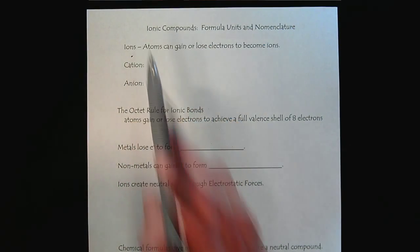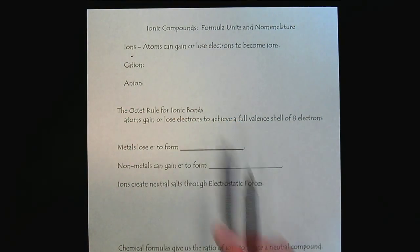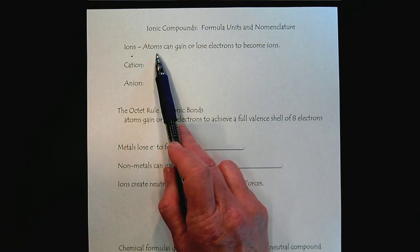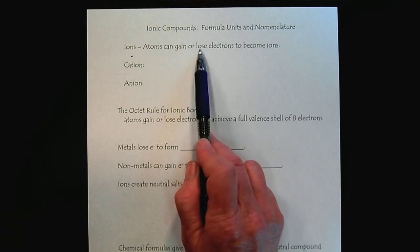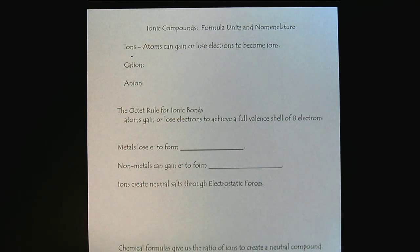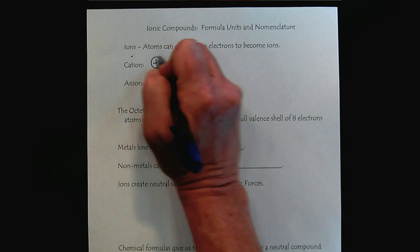This is a very important fundamental concept that will build off our understanding of ions. We know that ions occur because atoms can gain or lose electrons to become ions. Cations, that is the term to describe positive ions.